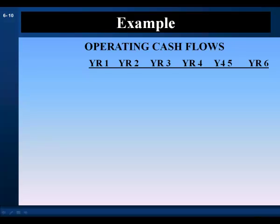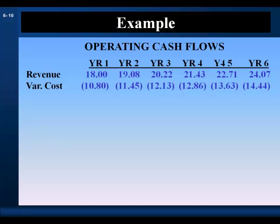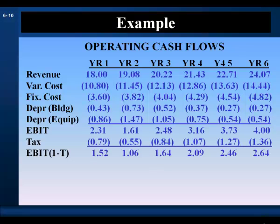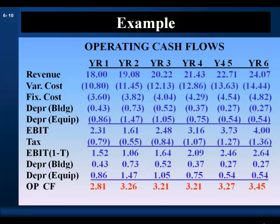For operating cash flows, our first year revenue is $18 million, increasing each year at 6% — the rate of inflation. Variable costs in each year are 60% of that year's sales. Fixed costs are initially $3.6 million in year one and increase at 6% in subsequent years. We add depreciation expense for the building and equipment. Revenues minus costs minus depreciation gives earnings before interest and taxes. We calculate tax at 34% of EBIT to get after-tax earnings, then add back depreciation to get operating cash flow.